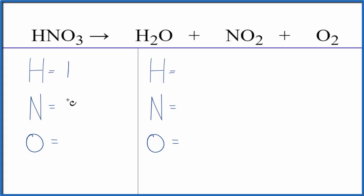So we have one hydrogen, one nitrogen, and three oxygens. On the product side we have two hydrogens, one nitrogen, and then the oxygens one plus two that's three plus two, five total oxygen atoms.